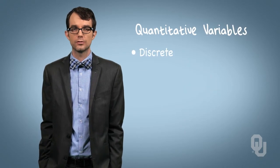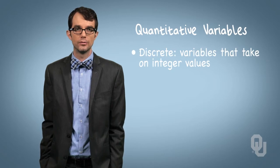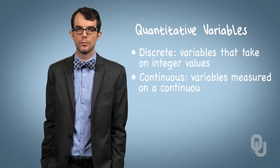Quantitative variables are either discrete or continuous. Discrete variables describe variables that take on integer values, while continuous variables are measured on a continuous number line.